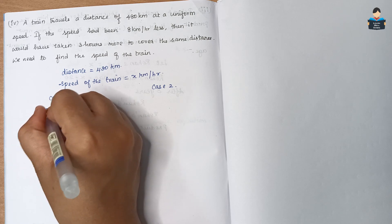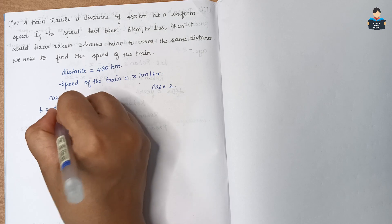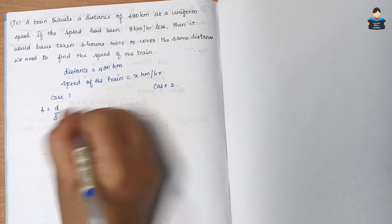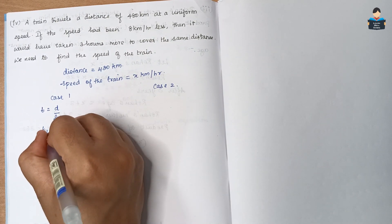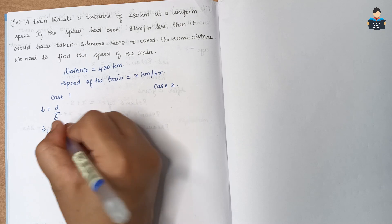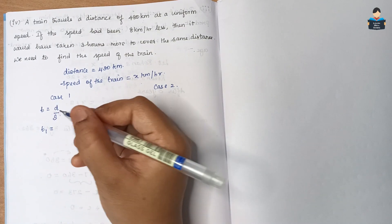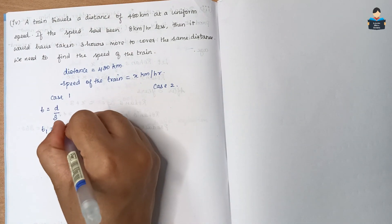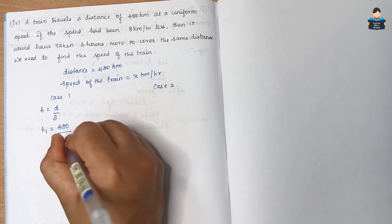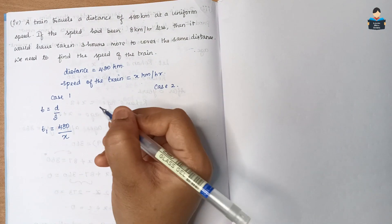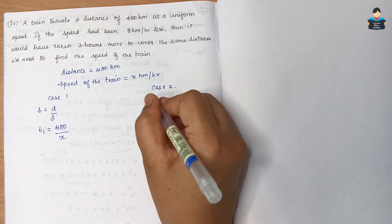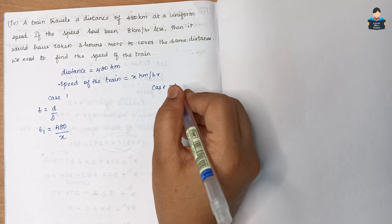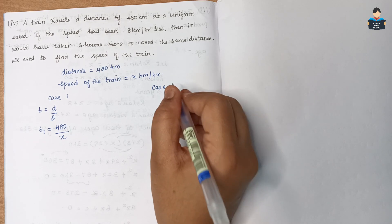Time equals distance by speed. Case 1: time t1 equals 480 divided by x. Case 2: speed is 8 km per hour less, so speed is x − 8.